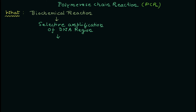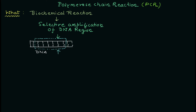Selective amplification means a specific region of the DNA molecule will be amplified using polymerase chain reaction. Consider this as the DNA molecule with various nucleotides and bases bound together with hydrogen bonds. Suppose I want to amplify a small region — highlighted with a dotted line. Chemically it is very hard to amplify this particular region, but biochemically it is possible using enzymes such as polymerase. Using PCR you can amplify this region in a very short time with a simple technique.